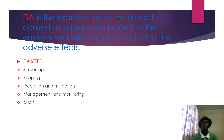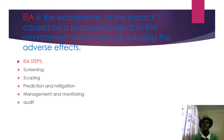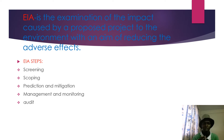The EIA steps are shown here. The first step is screening, followed by scoping, prediction, and communication. We then have management and monitoring, and finally we have the audit. All of these processes have to be followed in order to achieve or to have your license granted.